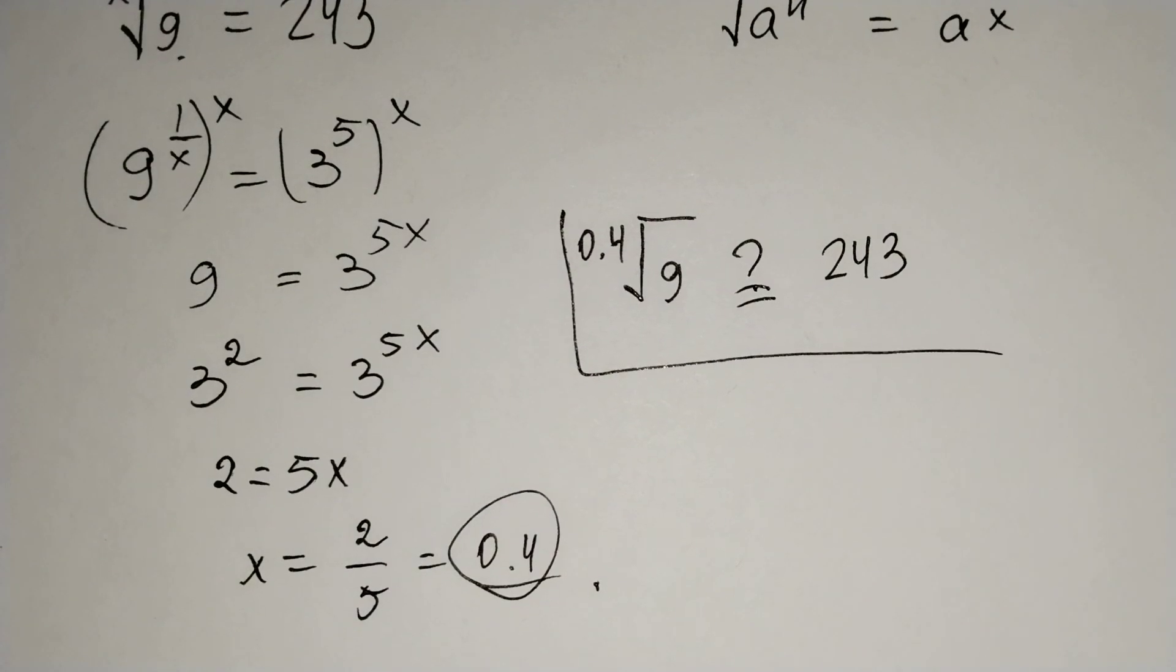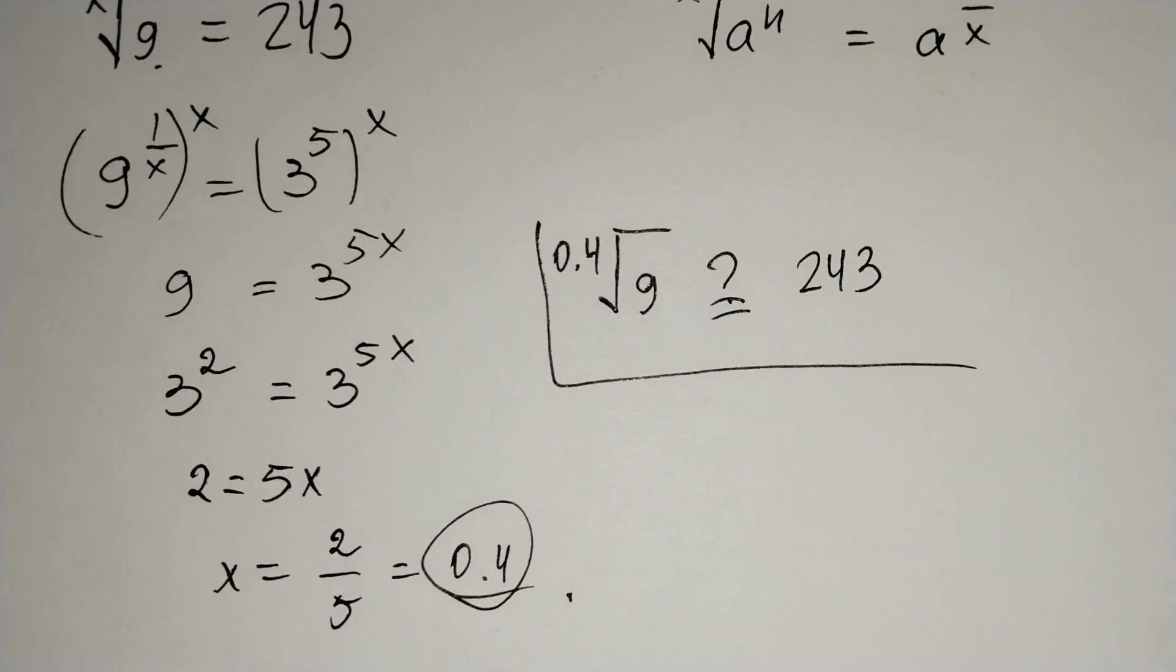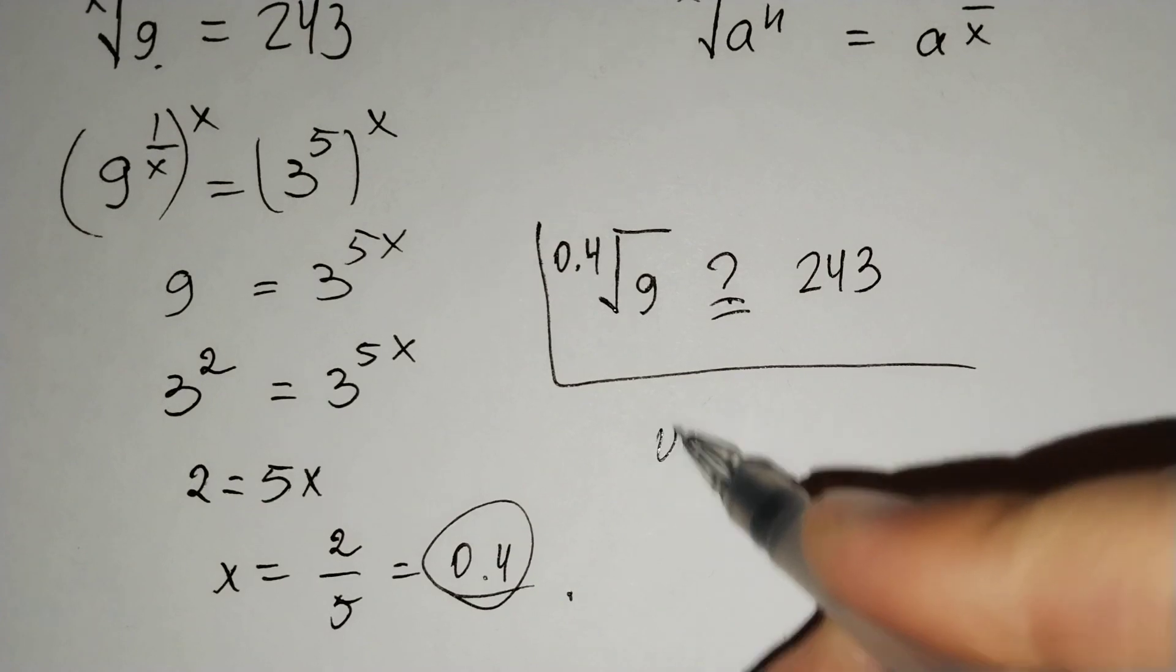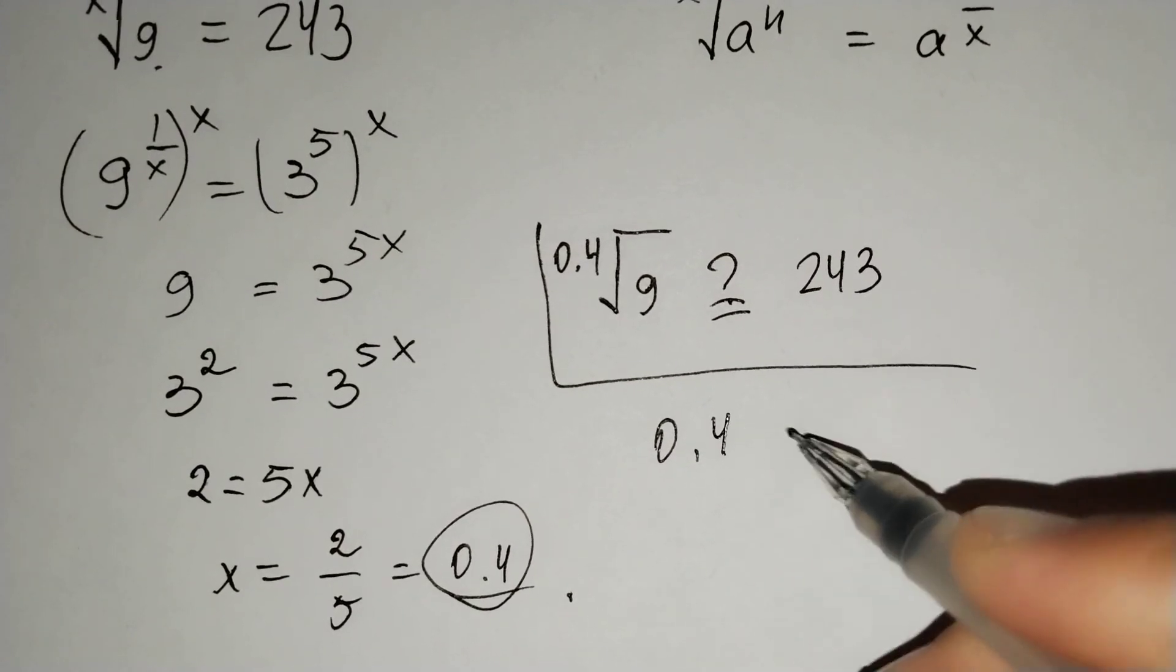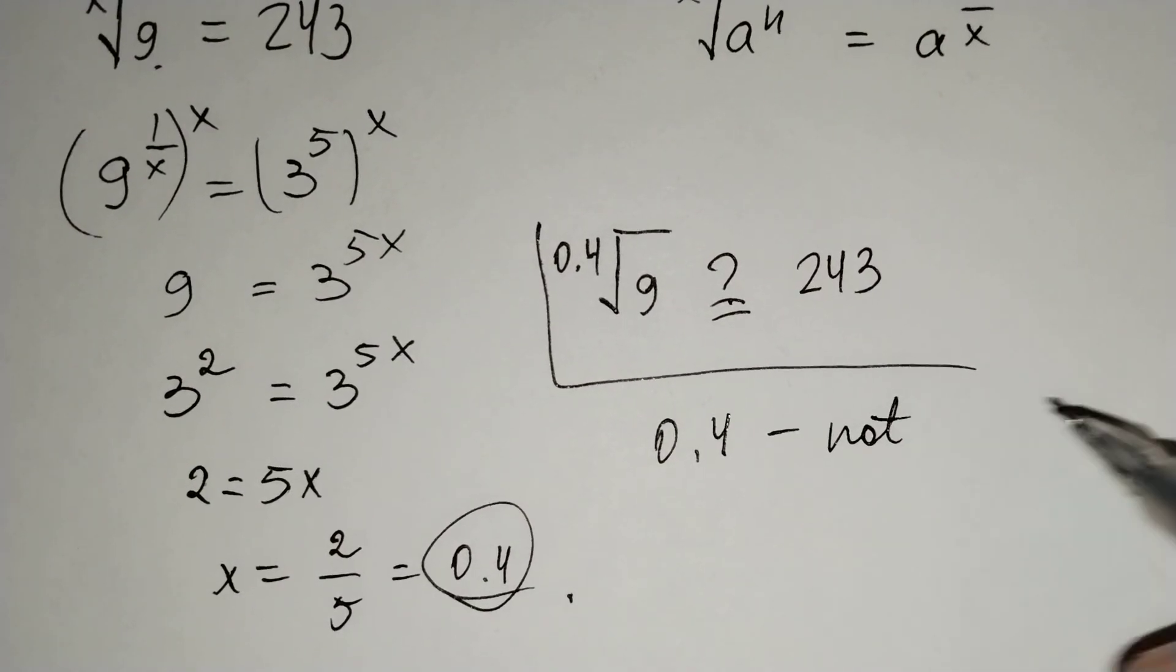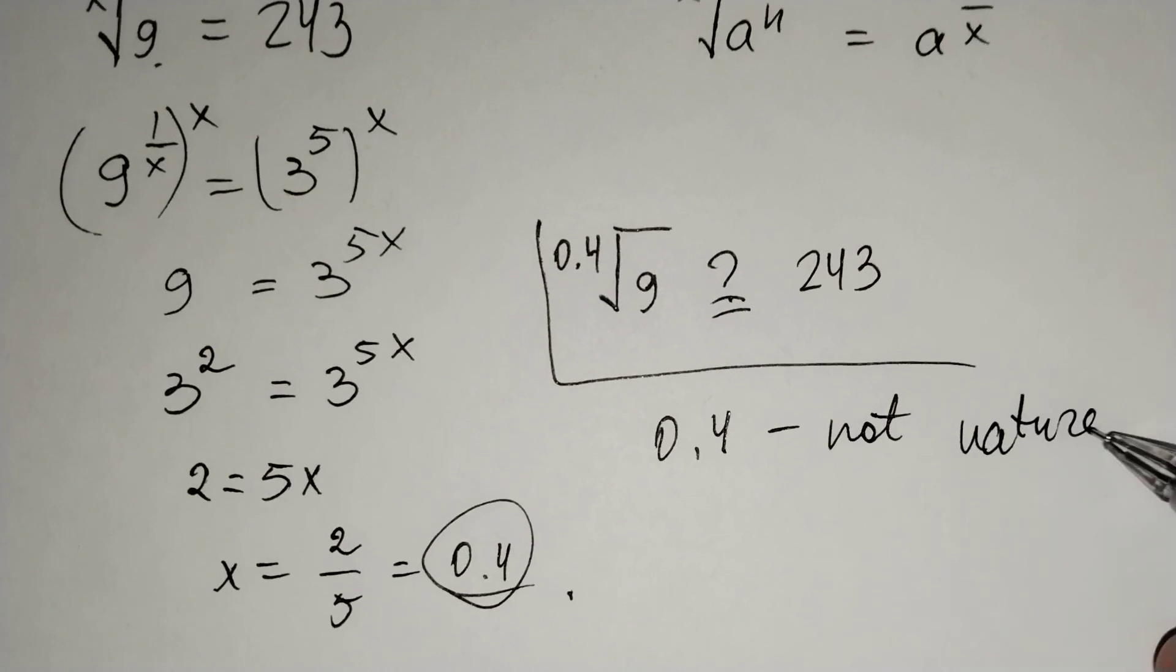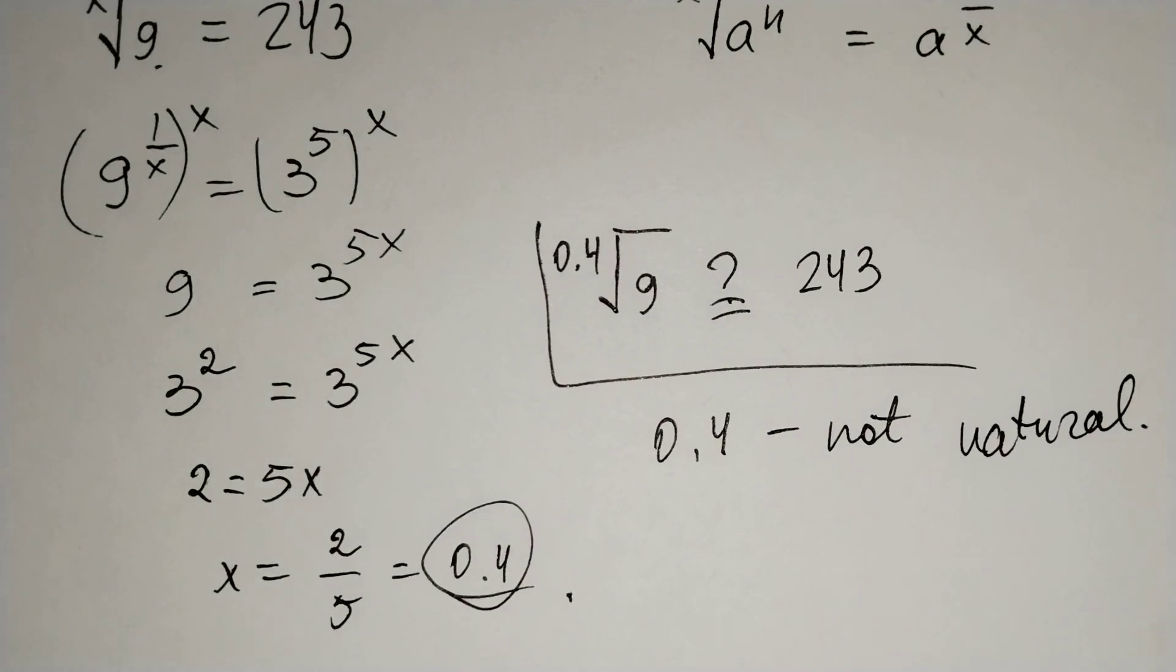This is not true. Because the index of radical can be only a natural number. But 0.4 is not natural. That's why x has no solution, and this expression is undefined.